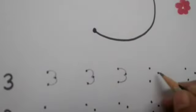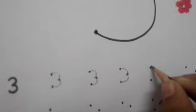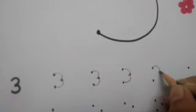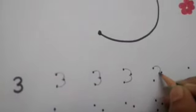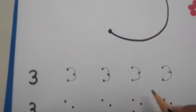One more time kids — curve and one more curve to make number 3. Like this you have to make number 3 on dots.